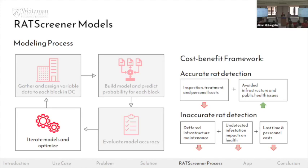An accurate rat detection prediction involves costs like inspection and treatment costs, inspector salaries, time, and gas — but these are minimal compared to the potential savings from avoided infrastructure and public health issues: avoiding damage to buildings and sidewalks, reducing risk of fire or power outages, and limiting exposure to health contaminants. Inaccurate predictions carry higher costs: deferred infrastructure maintenance, undetected infestations leading to further structural issues, significant health impacts, wasted inspector time, and lost city revenue.